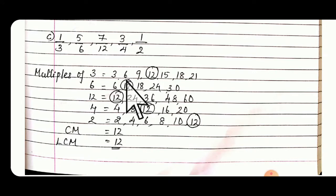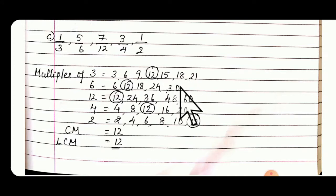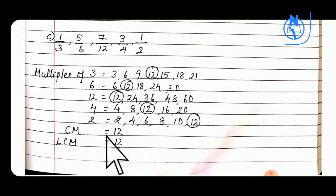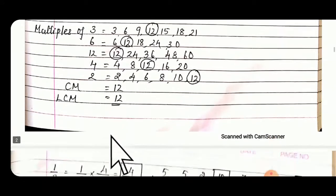Write down the multiples: 3 × 1 = 3, 3 × 2 = 6, 3 × 3 = 9, 3 × 4 = 12, 15, 20. Find the common multiples. The common multiple is 12, so the LCM is also 12.